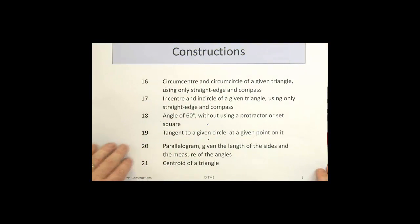We now turn to construction 18, constructing an angle of 60 without using a protractor or a set square.